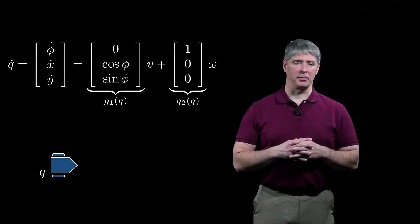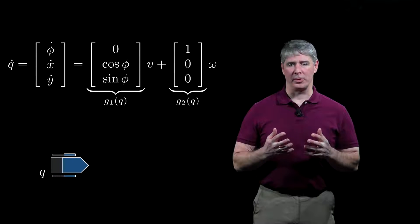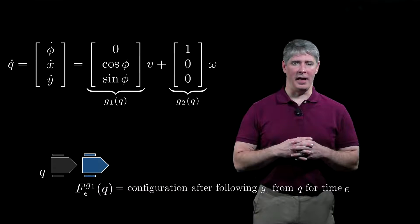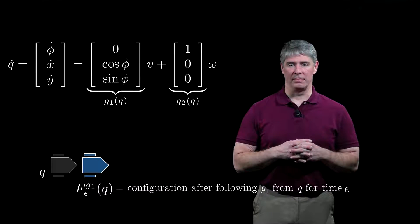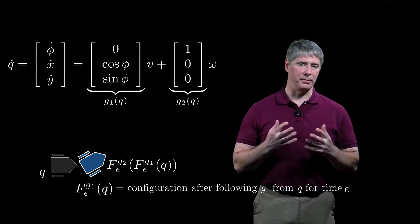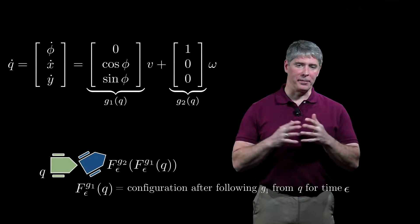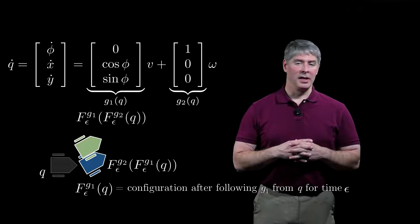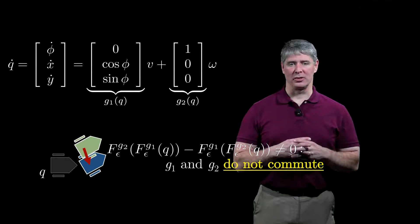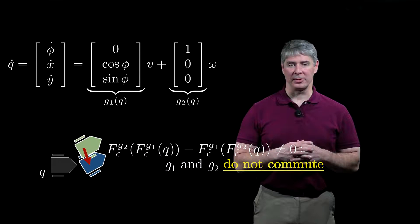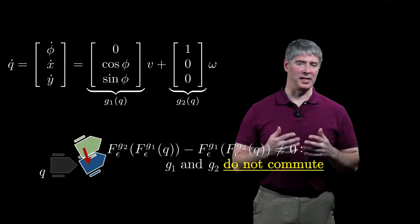If the initial configuration of the robot is q, and we follow the forward vector field g1 for time epsilon, the final configuration is written f-epsilon-g1 of q. After following g2 for time epsilon, the final configuration is f-epsilon-g2 of the previous configuration. If we reverse the order of following the vector fields, we end up at a different configuration. Therefore, we say the two vector fields do not commute. When the order of the two vector fields does not matter to the final configuration, the vector fields are said to commute.